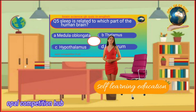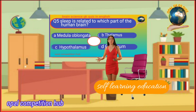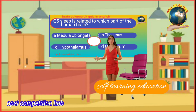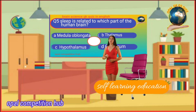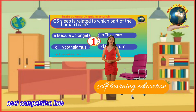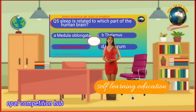Question number 5: Sleep is related to which part of the human brain? Option A: Hypothalamus. Option B: Thalamus. Option C: Hypothalamus. Option D: Cerebrum. Your time starts now. Your answer will be Option C: Hypothalamus.